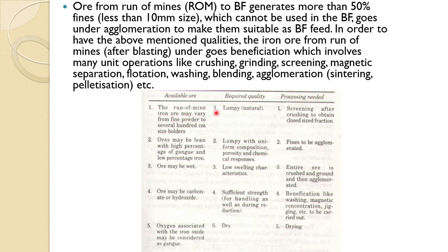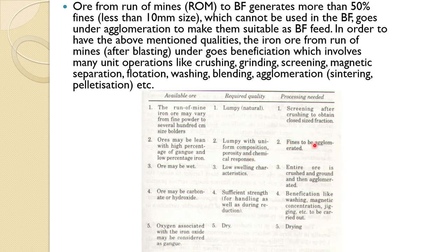From the run of mines, iron ore may vary from fine powder to several hundred centimeter size. Naturally you need lumpy natural ore, so you have to screen it and crush it to get the right size. Ore may be lean with a high percentage of gang and low percentage of iron, but what you need is a lumpy ore with uniform composition, porosity, and chemical response. So essentially it goes under agglomeration — either pelletization or sintering. Ore may have a lot of moisture, so the entire ore is crushed, ground, and then agglomerated.